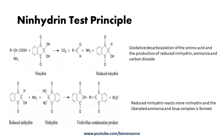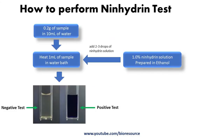To perform the ninhydrin test, prepare a sample of approximately 0.2 grams dissolved in water to a 10 ml volume. Take 1 ml of this solution and mix it with two or three drops of 1% ninhydrin prepared in ethanol. Heat the mixture in a water bath for two to five minutes.